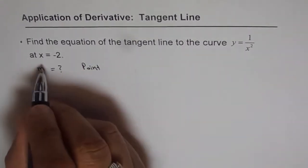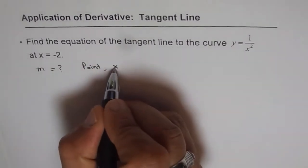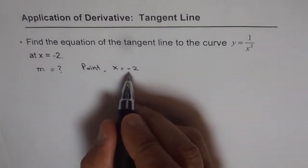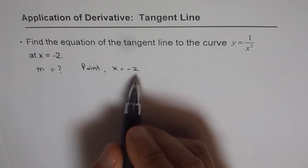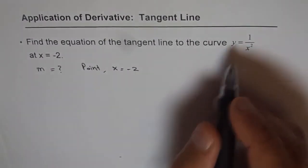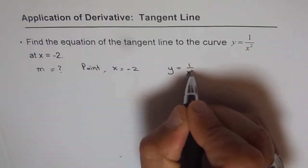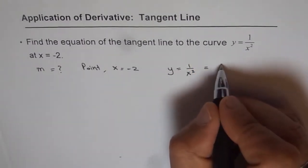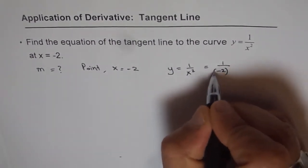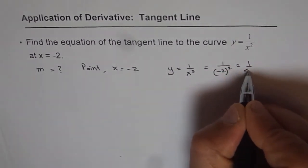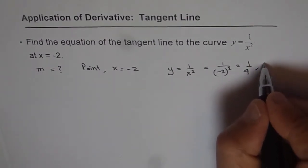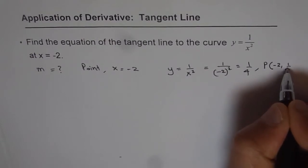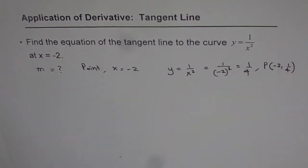As far as the point is concerned, we are already given that the x-value of the point is minus 2. Once we know the x-value, we can find the y-value from the curve itself. The curve is y equals 1 over x squared. So if we place x as minus 2, we get 1 over (minus 2) squared, which is 1 over 4. Therefore, the point P is (minus 2, 1/4).